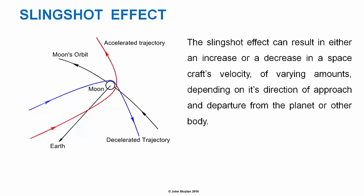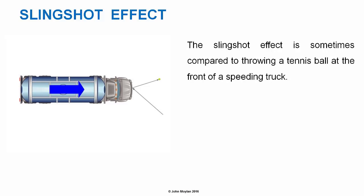The slingshot effect is an example of projectile motion, but the trajectories of a spacecraft undergoing a gravitational assist are best modelled as hyperbolas rather than as parabolas, due to the change in direction and the force of gravity as the spacecraft approaches and then moves away from the planet.